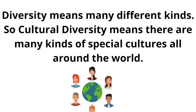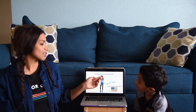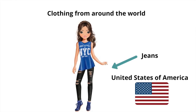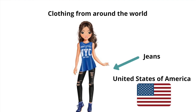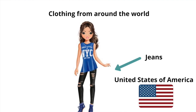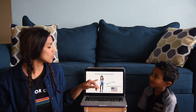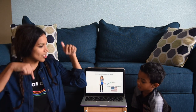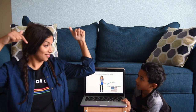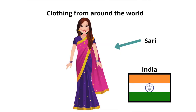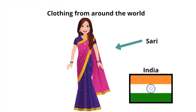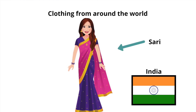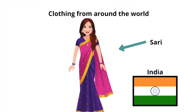Let's look at some clothing from around the world. First, jeans and a tank top — clothing worn in the United States. Next is a sari, worn in India.